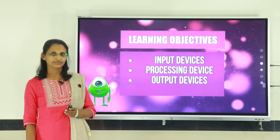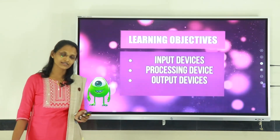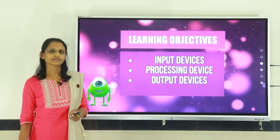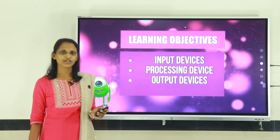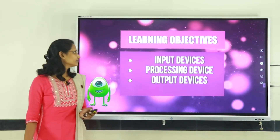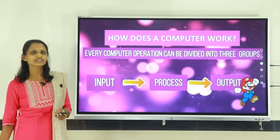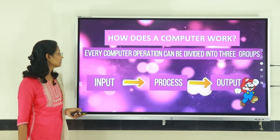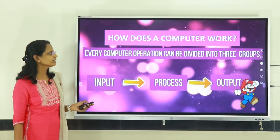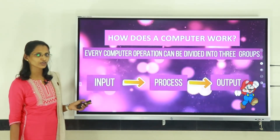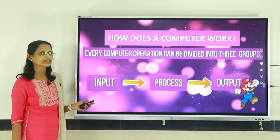What is a computer? A computer is an electronic machine. Then how does a computer work? Every computer operation can be divided into three groups: that is input, process, and output.